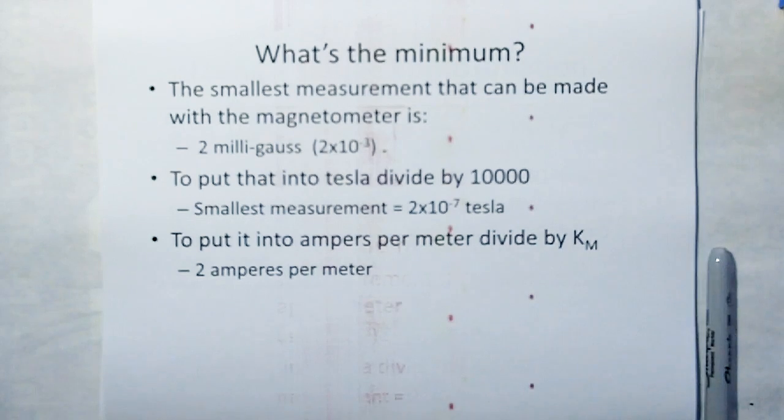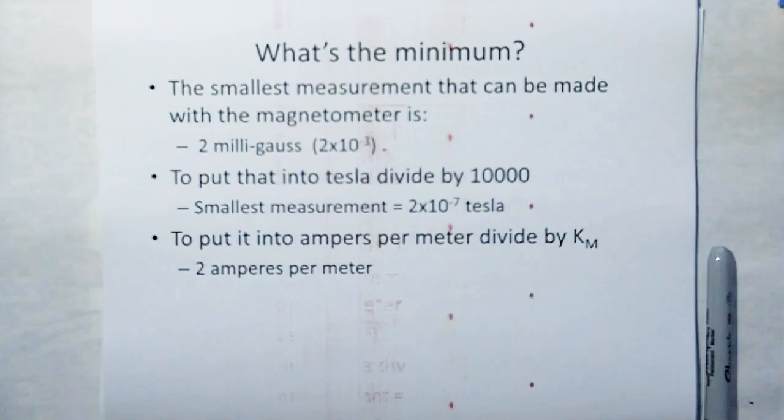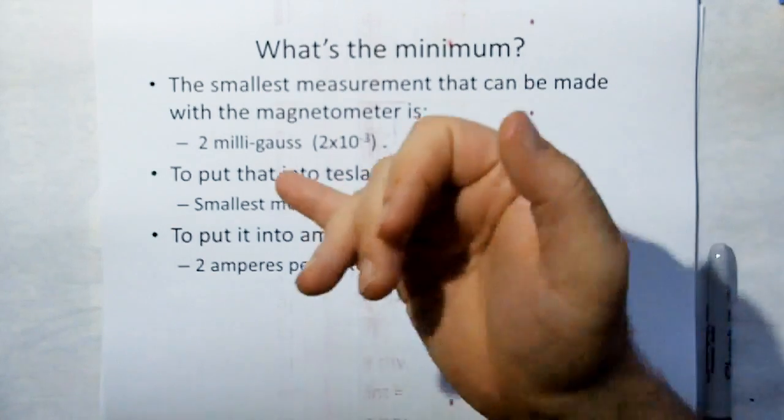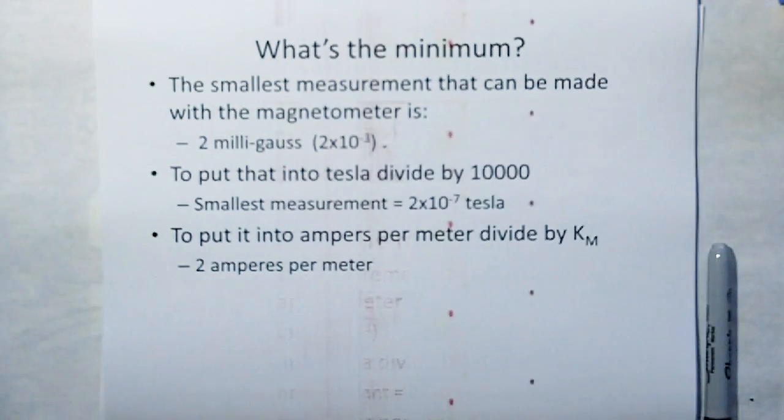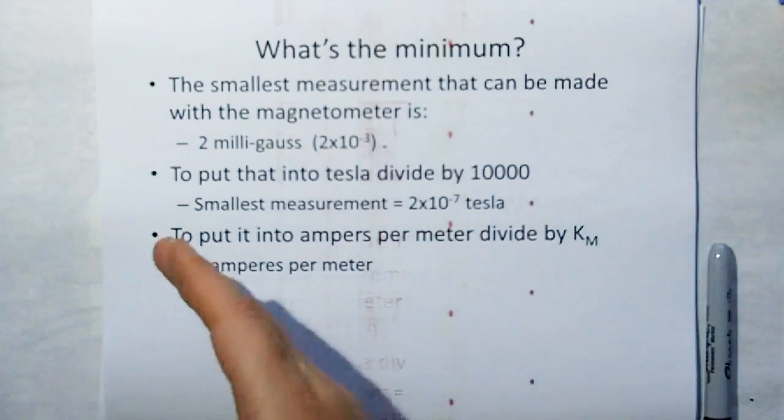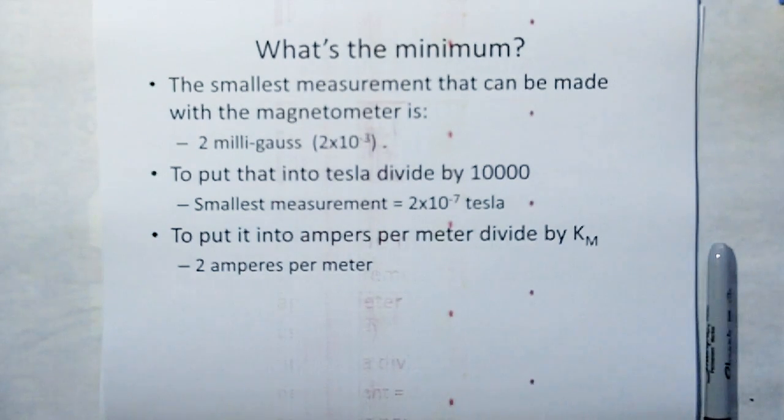So what's the minimum? Well, the smallest measurement that can be made with the magnetometer that we have available is 2 milligauss (2×10⁻³). To put that into tesla divide by 10000. Smallest measurement from the device is 2×10⁻⁷ tesla.